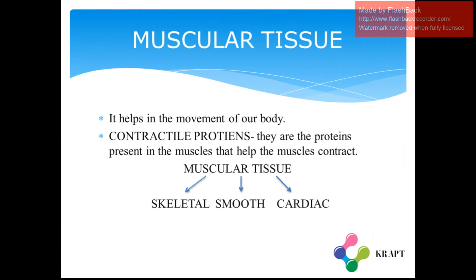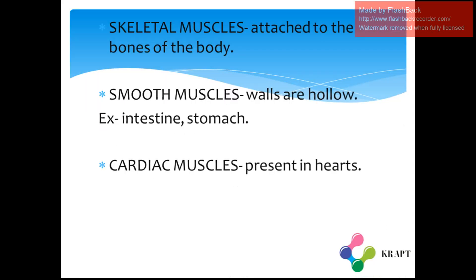The next type of tissue is muscular tissue. Muscular tissue helps in the movement of our body. There is a contractile protein which helps the muscles to contract. Muscular tissue is divided into three parts: skeletal tissue, smooth tissue, and cardiac tissue.